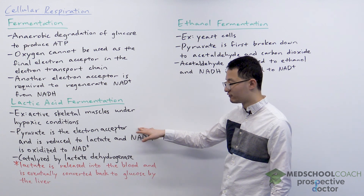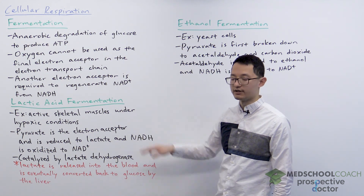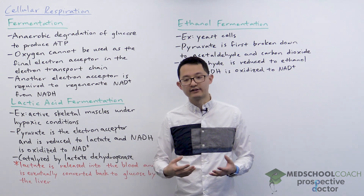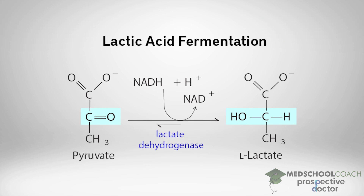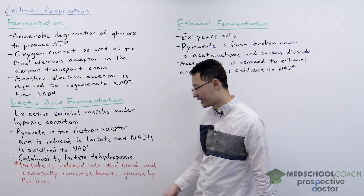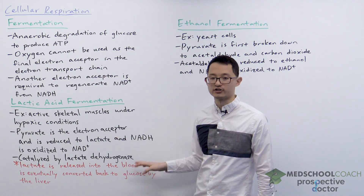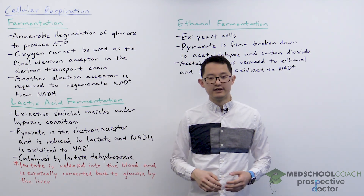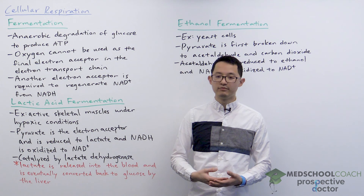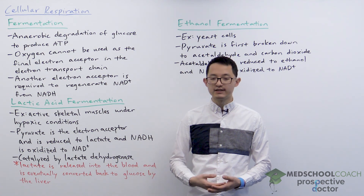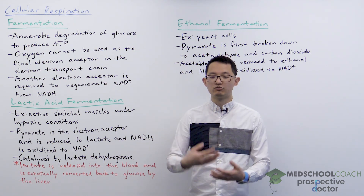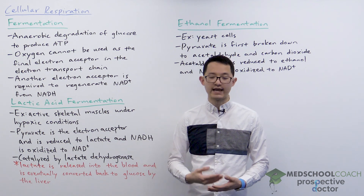Here pyruvate serves as the electron receptor. As you can see in this diagram, in lactic acid fermentation pyruvate is reduced to lactate and NADH is oxidized to NAD+. This is catalyzed by the enzyme lactate dehydrogenase. Using this reaction we're able to regenerate NAD+ so that we can continue to run glycolysis to produce ATP.